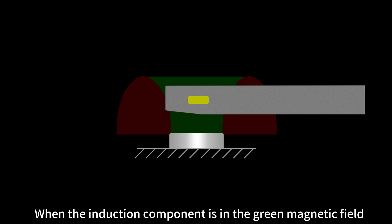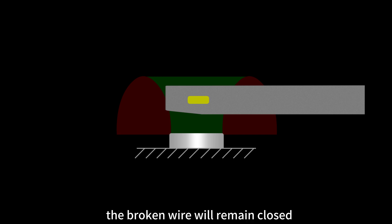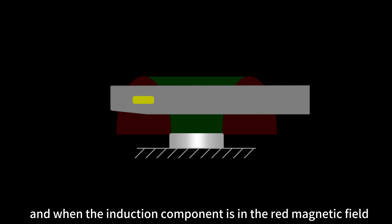When the induction component is in the green magnetic field, the broken wire will remain closed. And when the induction component is in the red magnetic field, the broken wire will open.